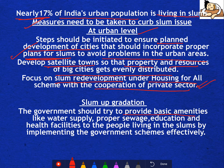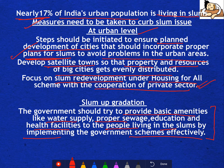For slum upgradation, the government should try to provide basic amenities like water supply, proper sewage, education, and health facilities to people living in slums by implementing government schemes effectively. To rehabilitate slum dwellers, the government can reclaim that land and provide housing under Housing for All, or develop satellite towns — these are different approaches.